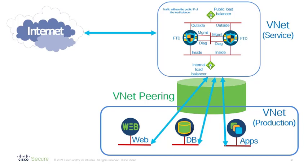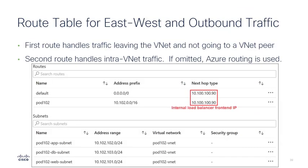Now we see the picture of our service subnet involving possibly many firewalls in a load balancer sandwich, peered to our production subnet. With regards to the routing, all you have to do is replace the next hop in your route table with the frontend IP of the internal load balancer, and your east-west and outbound traffic will be routed correctly.